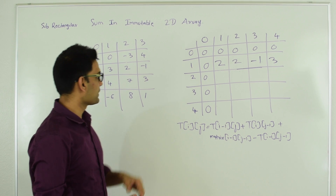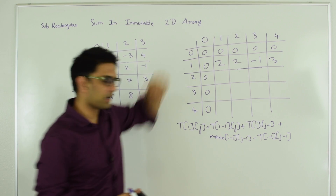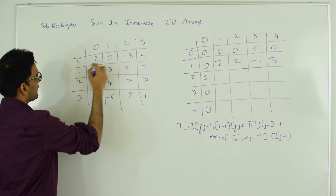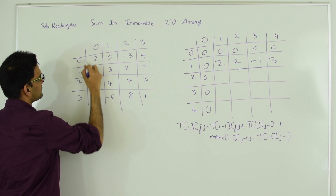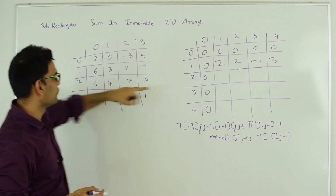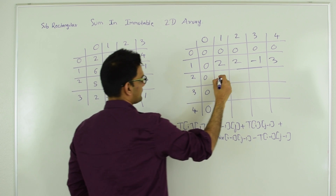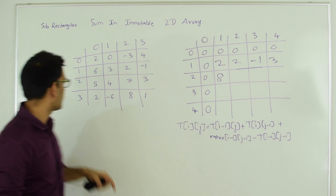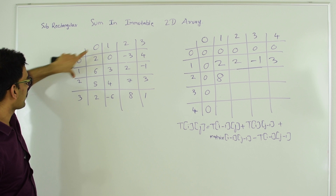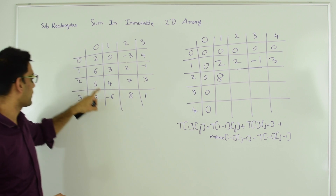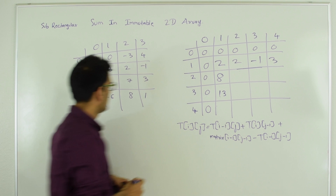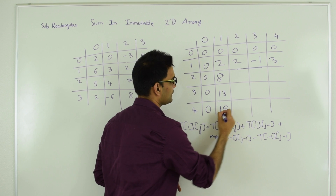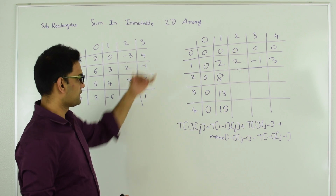This is how we filled up our first row. Similarly, let's fill up the first column. For value T[2,1] we're looking for the rectangle from 0,0 to 1,0, which is 2 plus 6 equals 8. For T[3,1] we're looking for the rectangle whose bottom-right is 2,0: 8 plus 5 equals 13. And finally T[4,1] is 13 plus 2 equals 15. So now we have filled up our first row and first column.